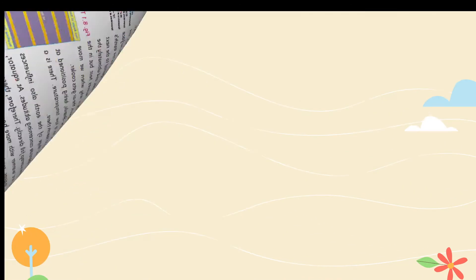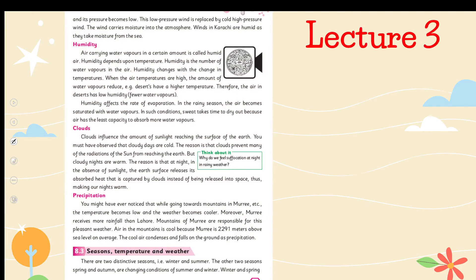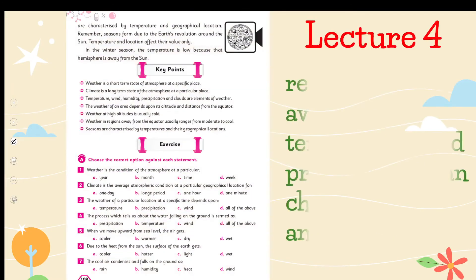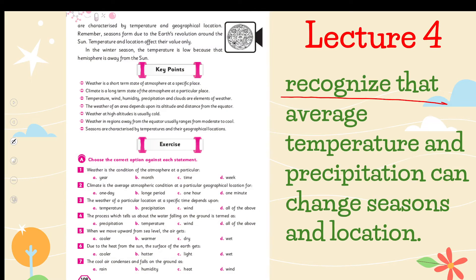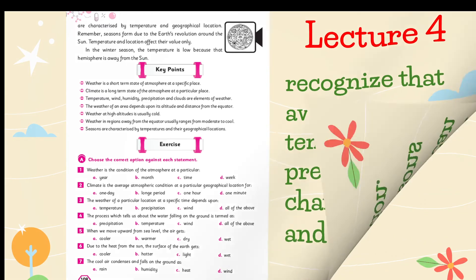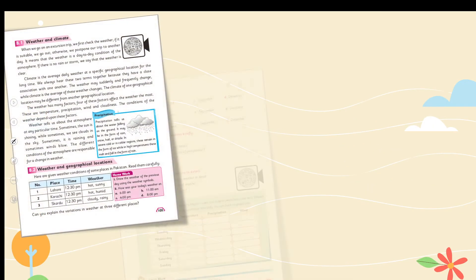The elements discussed will be temperature and wind. Then in Lecture Number Three, same elements will be discussed again but this time students will discuss humidity, clouds, and precipitation. Then in Lecture Number Four, the students will recognize that average temperature and precipitation can change seasons and location — kis tarike se seasons aur location change ho sakte hain temperature aur precipitation ki wajah se.